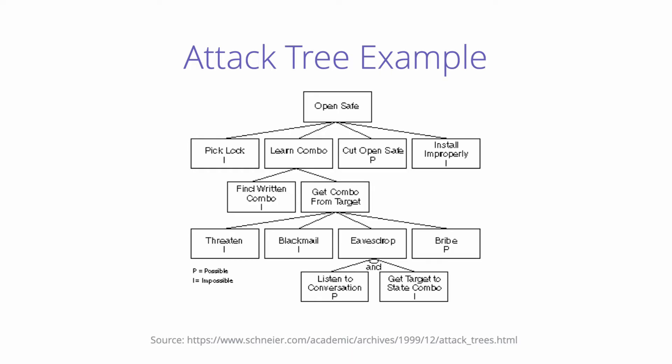That's a basic version of an attack tree. Notice there's also an AND symbol at the lower-level leaf nodes. The AND node for eavesdropping means the attacker needs to listen to a conversation, but that's not enough — the attacker also needs to wait or continue eavesdropping until the owner actually uses the combination in the conversation being eavesdropped. Attack trees can be AND trees or OR trees.